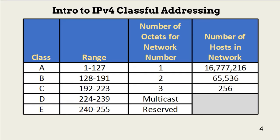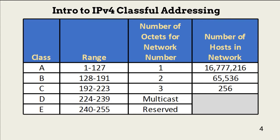Classes are used in classful routing. Classful routing protocols use predefined class assignments to determine which octets to use as the network and host address spaces. This table shows the classes and the octet assignments in classful routing. Reserved addresses are not assigned. Multicast addresses are used to deliver packets to a group with a single transmission. Note that the class you use affects the number of host addresses.